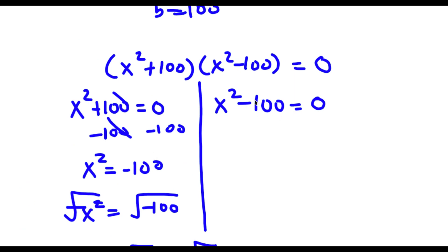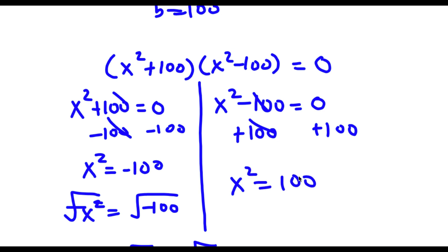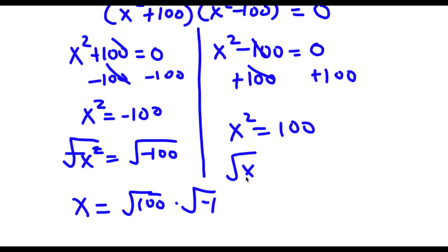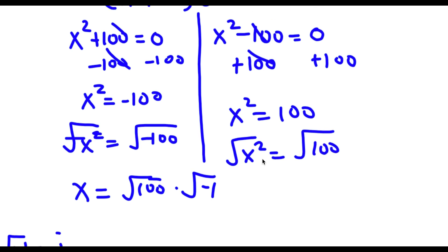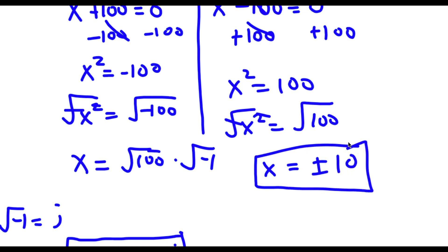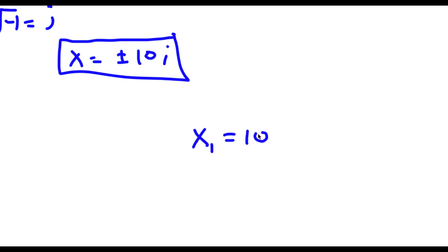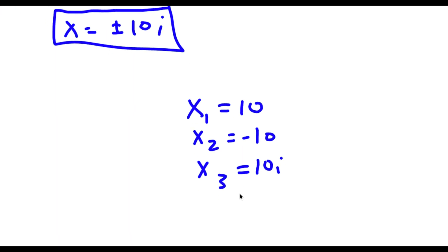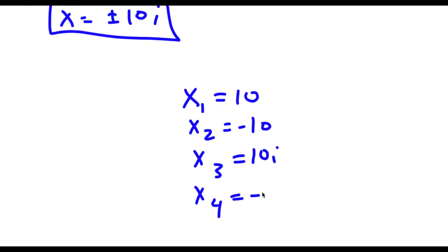For x squared minus 100 equals zero, I'm going to start by adding 100 on both sides so these two cancel out. Now I'm left with x squared is equal to 100. Taking the square root on both sides, these two cancel out and I'm left with x is equal to the square root of 100, which is equal to positive or negative 10. So my four solutions to this problem are x equals 10, x equals negative 10, x equals 10i, and x equals negative 10i.